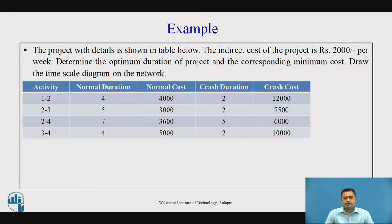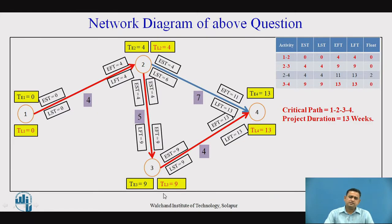This particular project has four activities with their normal duration as well as normal cost, crash duration as well as crash cost. The indirect cost associated with the project is 2,000 per week. This is the normal network diagram showing that the critical path is 1-2-3-4 and the overall project duration is 13 weeks.